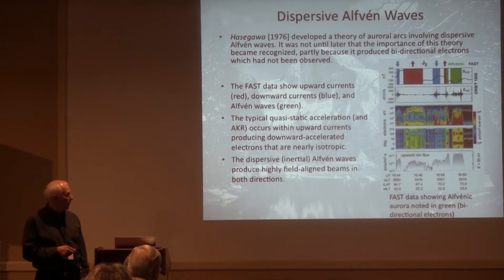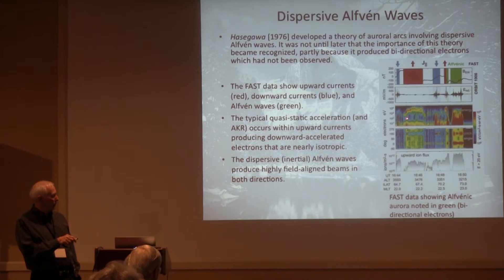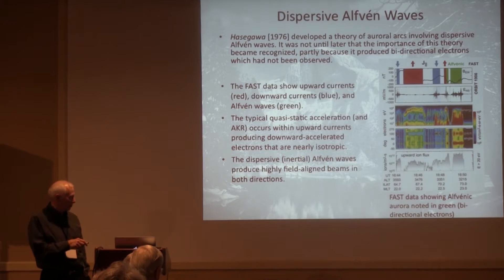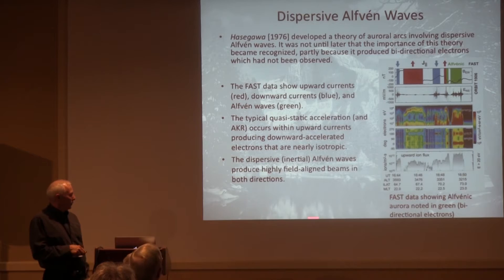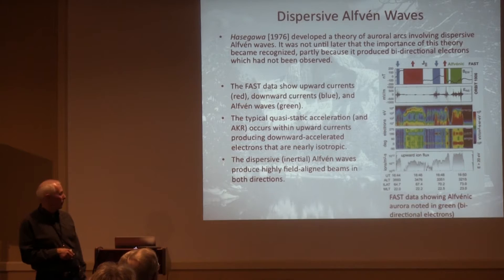These measurements are from FAST. The pole's over here and the equator's down this way. Here's the inverted-V — the upward current region. Here's the downward current region where you don't see the inverted-V because the potential drop is in the other direction. And here's the Alfvénic region. In the upward current region you have a loss cone; in the Alfvénic region you have counter-streaming energetic electron beams. This was exactly what Hasegawa's theory predicted, so now people like his theory even though it languished for quite a while.